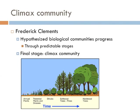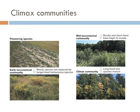Frederick Clements proposed that following a disturbance, ecological communities followed a series of predictable stages from r-selected species towards K-selected species, eventually resulting in what he termed a climax community. Pioneer species consisting of r-selected species are the first to arrive. Those weedy species are then replaced by longer-lived, more competitive herbaceous species — an early successional community. Clements hypothesized those herbaceous species were then replaced by shrubs and short-lived trees — a mid-successional community. Finally, shrubs and trees are replaced by long-lived larger tree species, and once established, this plant community tended to replace itself until a major disturbance attacked it.